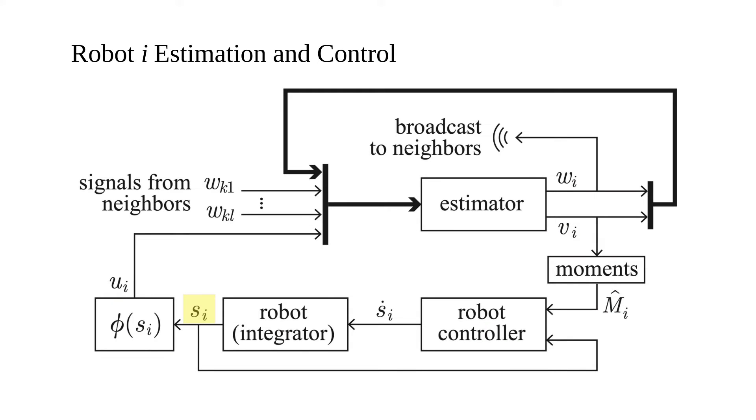Each robot uses its position measurement SI to calculate its contribution to the estimate of the swarm's moments VI. The estimator takes the individual robot's estimate and the neighbor estimates to estimate the moments that describe the swarm's current formation. The gradient controller uses the difference between the estimated moments and the desired moments to determine the motion of each robot.